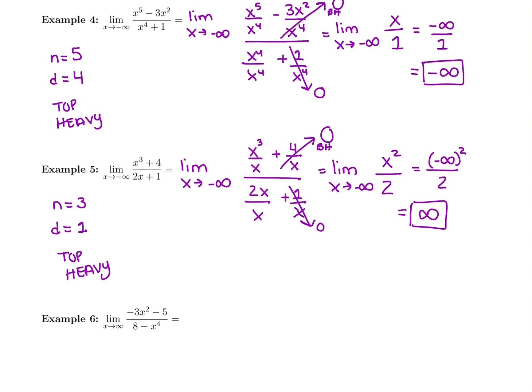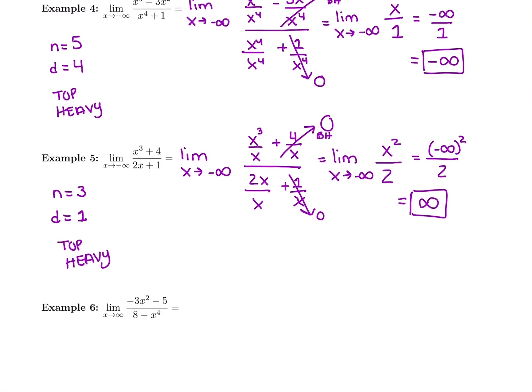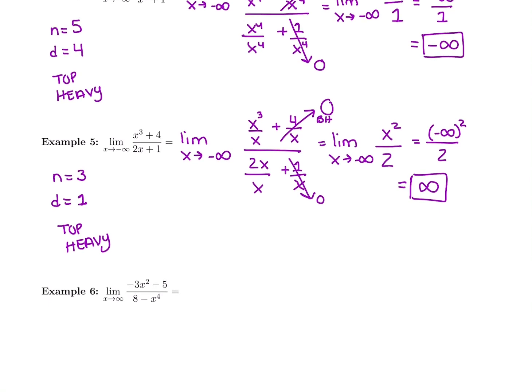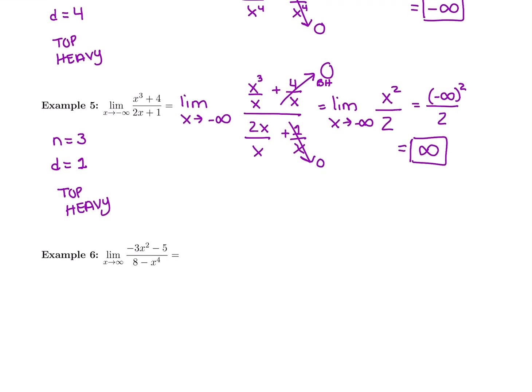So we just did a limit as x goes to negative infinity and the answer was negative infinity. This one, x went to negative infinity and the answer was positive infinity. So there's not a pattern where, if you're plugging in and it's going to negative infinity, the answer is automatically one thing. You always have to divide by the highest power of x in the denominator and see which infinity you get.